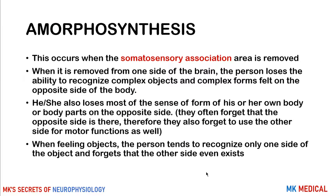With amorphosynthesis, this occurs when the somatosensory area has been removed from one side of the brain. The person loses the ability to recognize complex objects and complex forms felt on the opposite side of the body, because impulses from the left side of the body are projected to the right side of the cortex, and vice versa. The person also loses awareness of most sensations from that side of their own body and may forget to use the opposite side for motor function as well.